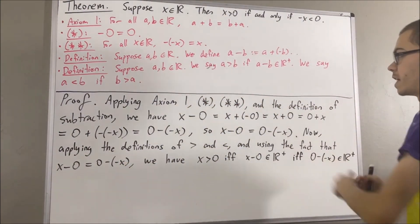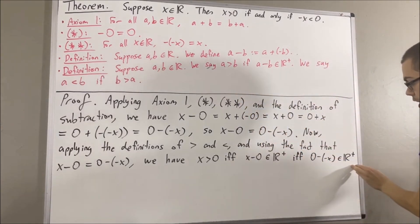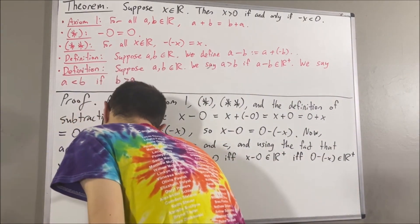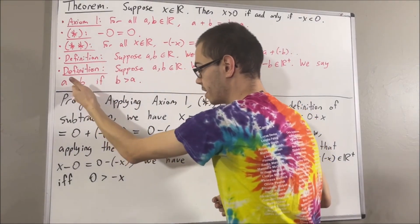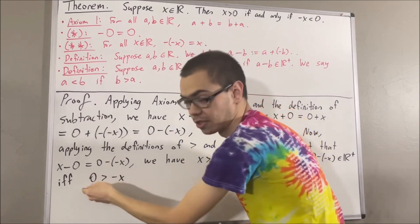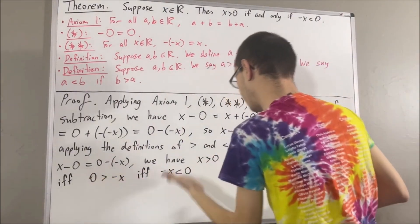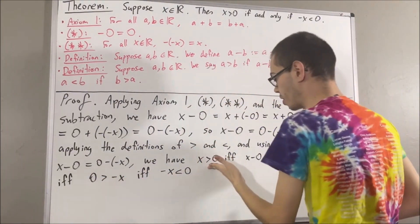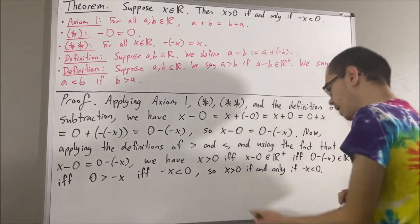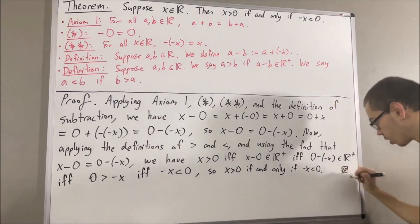But then, by definition of greater than again, to say that zero minus the negative of x is a positive real number is equivalent to saying zero is greater than the negative of x. But then, by definition of less than, to say that zero is greater than the negative of x is equivalent to saying the negative of x is less than zero. So, through this chain of if-and-only-ifs, we have established that x is greater than zero if and only if negative x is less than zero. And that is exactly what we wanted to prove. So this completes the proof.